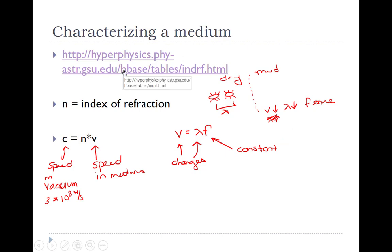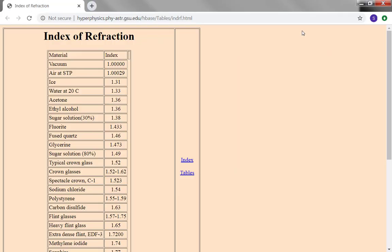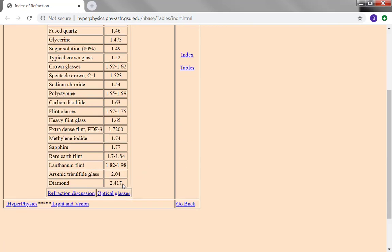We have at the top here a table of indices of refraction. Here is that table. You can see vacuum up here at 1. Air at standard temperature and pressure is just a little bit different than 1, but for all intents and purposes for this class, we're going to let the index of refraction in air be 1. We got ice and water at 1.33. If we come down further, we get into the glasses at 1.5. And all the way at the bottom of the list is diamond at 2.417.